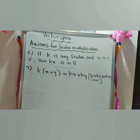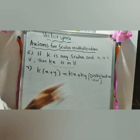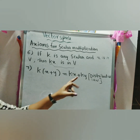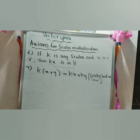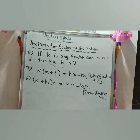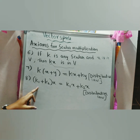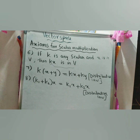Seventh property: k times (x plus y) equals kx plus ky — this is the distributive law. Eighth property: (k1 plus k2) times x equals k1x plus k2x — this is also the distributive law.